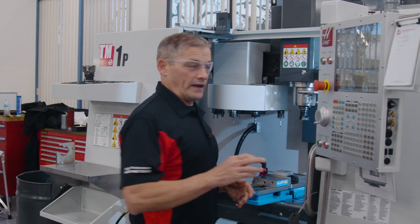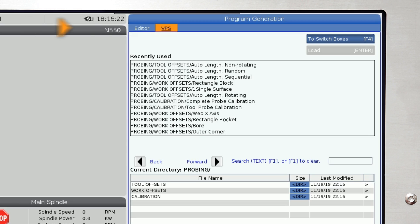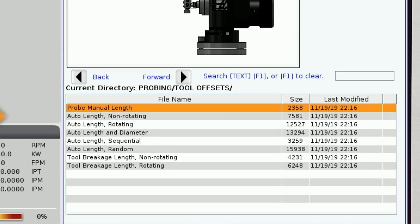Let's get started by pressing edit and then arrow down to the VPS tab. Then go to probing and tool offsets and select auto length non-rotating.